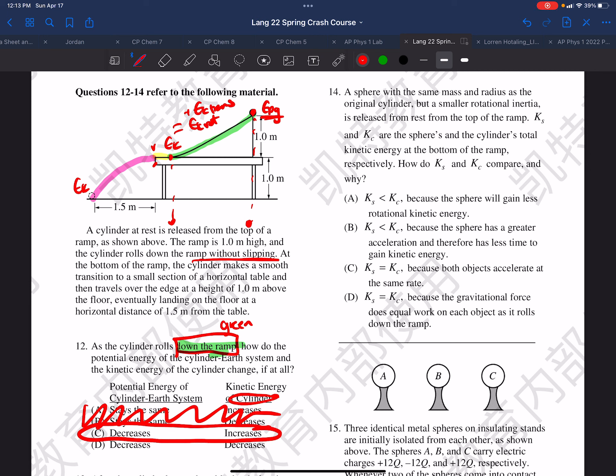Choice C. For choice D to be correct, the cylinder would have to slow down going down the inclined plane, which makes no sense.